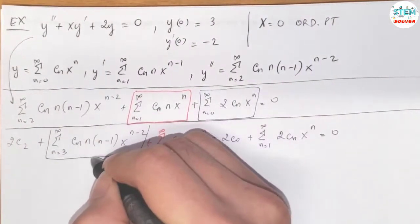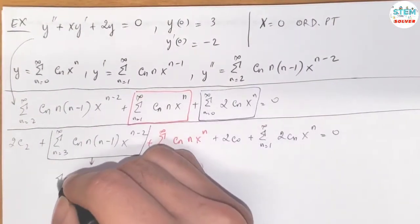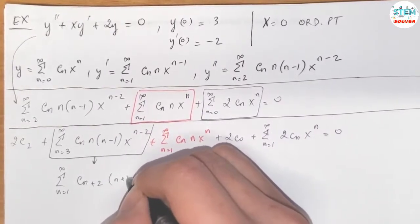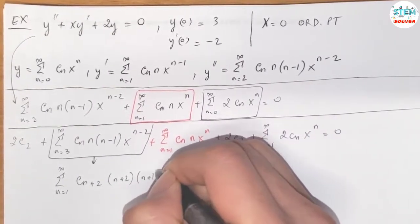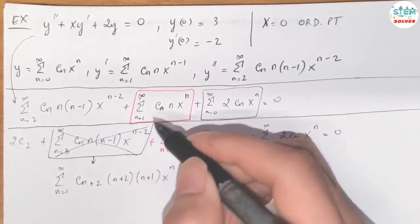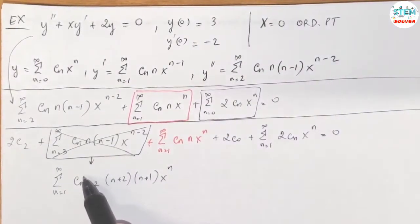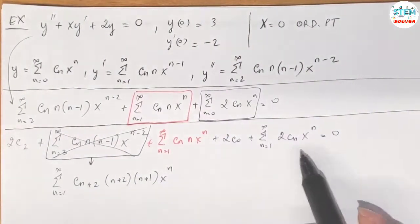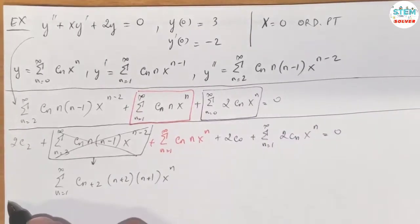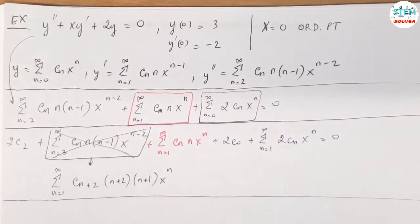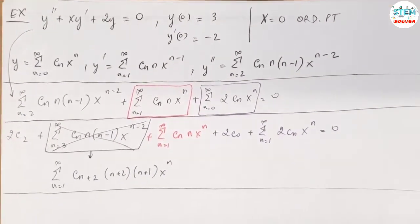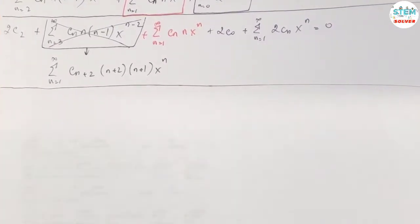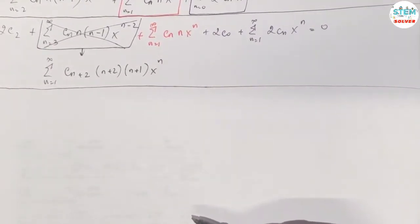So re-indexing the first series to start at 1, we get the power series from 1 to infinity: c_{n+2}(n+2)(n+1) x to the n. Then cross out the original first series and work only with this re-indexed form. This is the fastest way to handle the re-indexing when dealing with power series.